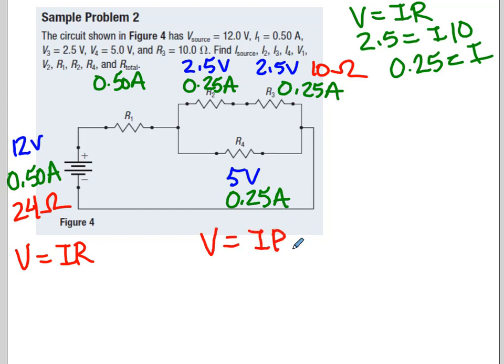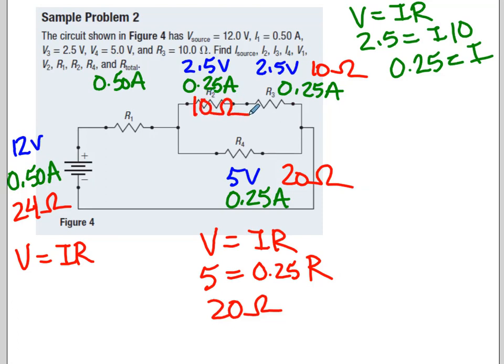So V equals IR. So 5 equals 0.25R. Divide that out. And you get 20 ohms for this one. Do the same at the top, 2.5 divided by 0.25. And you get 10 ohms. And if you go around and check, you have three pieces of information for everything but R1. Okay, so if we look here at the junction, this has a drop of 5 volts between these two. I had 12 to start. That means this has to have a drop of 7 volts. And now I have two out of the three pieces of information. So I can go back to Ohm's Law. It goes 7 divided by 0.5. And I should get 14 ohms. Okay, and that's how you do it.